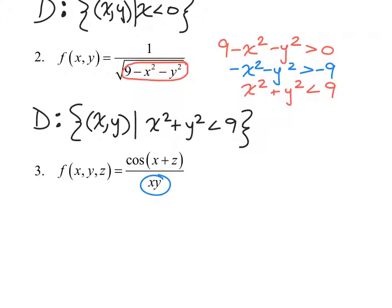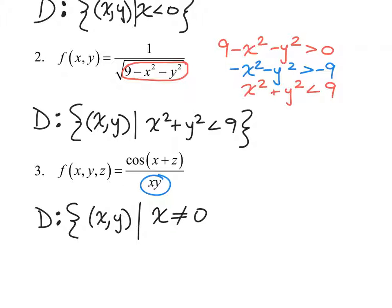In number three, we want to look at any transcendental function. Cosine is not problematic because cosine is everywhere continuous. We don't have to worry about the domain there. But we do have to be mindful that some trig functions are undefined for certain values of x and z. If this were secant or tangent instead of cosine, we'd have to be careful. But as it turns out, the only values I'm worried about are x and y — so this function is good to go as long as x is not equal to zero and y is not equal to zero.